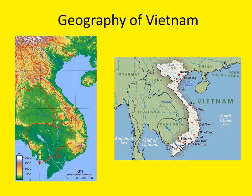Vietnam runs about 1,000 miles in length from north to south, while at its narrowest, the country is as little as 30 miles wide in some of the central coastal regions.